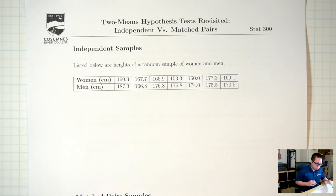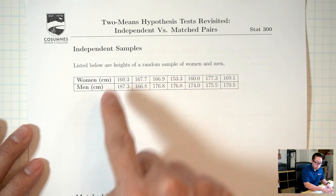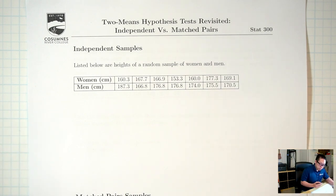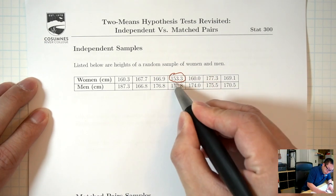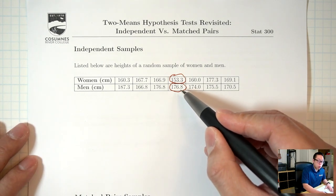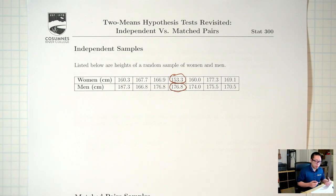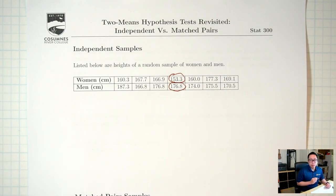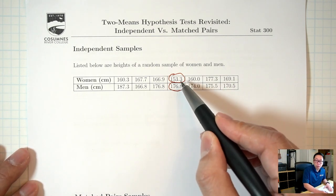The first situation is this first example: listed below are heights of a random sample of women and men. The first row is heights of a sample of women, the second row is heights of a sample of men. Let's take a look at two of these numbers — 153.3 and 176.8. The question we need to ask is: based on the description, is there any reason why this 176.8 needs to go with this 153.3? We're not told that they're related in any way, so there's no reason why these two values need to go together.